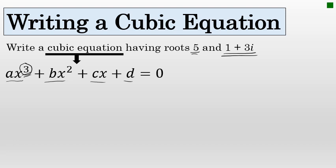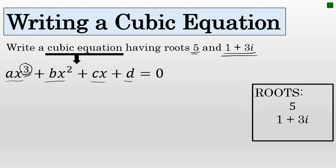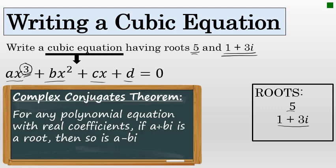A third-degree equation implies that there would be three solutions. The directions have only given us two roots: 5 and 1 plus 3i. However, by the complex conjugates theorem, we can determine what the third root would be. The complex conjugates theorem states that for any polynomial equation with real coefficients, if a plus bi is a root, so is a minus bi.